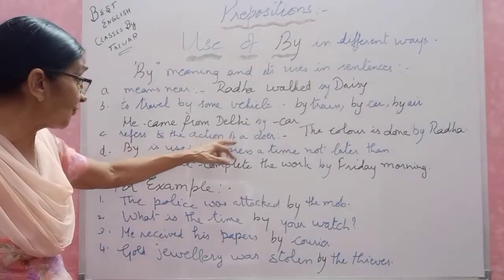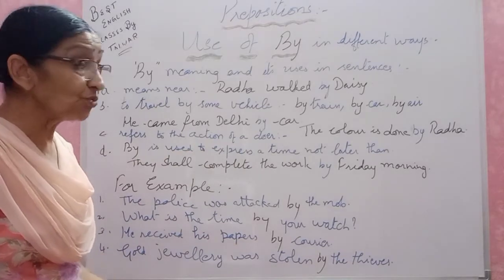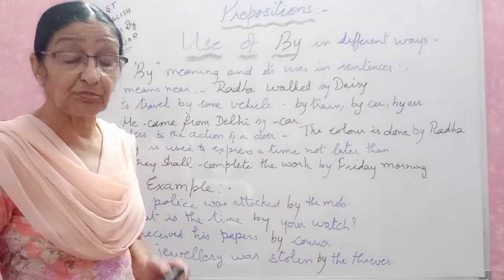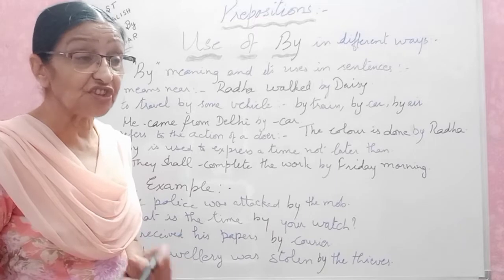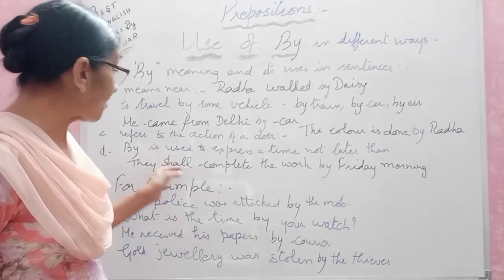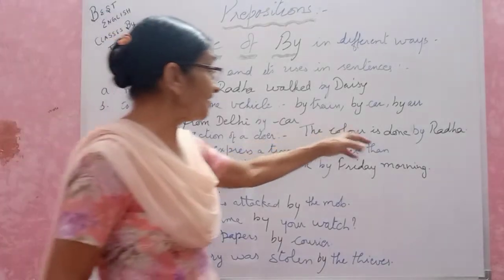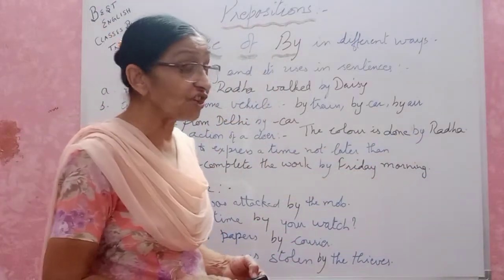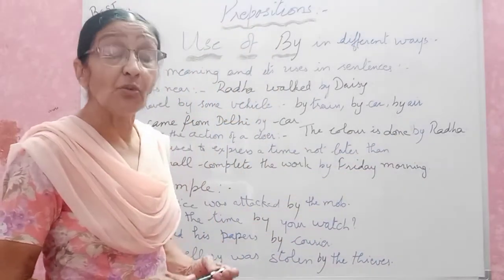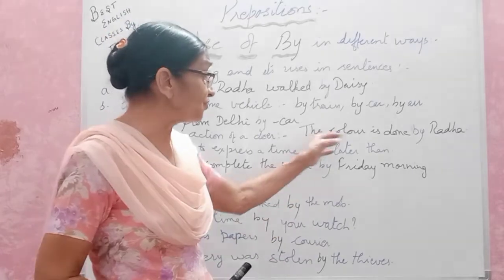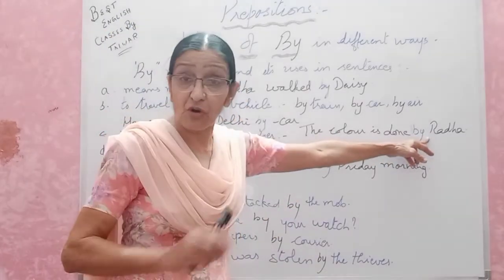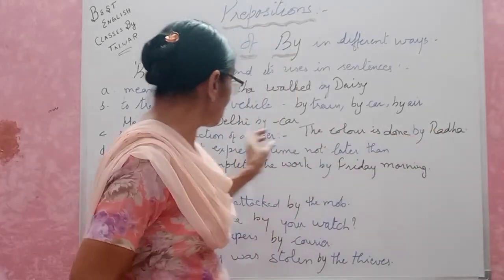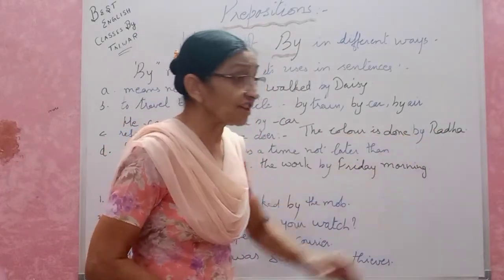Next, 'by' has reference to the action of a doer — the person who is doing the work, who is doing the project, or whatever he or she is doing. We also use 'by' there. For example: 'The colour is done by Radha.' Whether it is painting or drawing, who is doing it? By Radha. Radha has done all this work. By whom? By Radha. So 'the colour is done by Radha.'